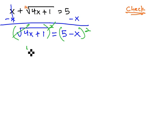Square and square root are inverses, leaving just 4x plus 1 equals... Be careful here. We cannot say 25 minus x squared, or even 25 plus x squared. Recall, when we're squaring a binomial, we square the first term, multiply them together twice, ab and ab is 2ab, and then square the last term.